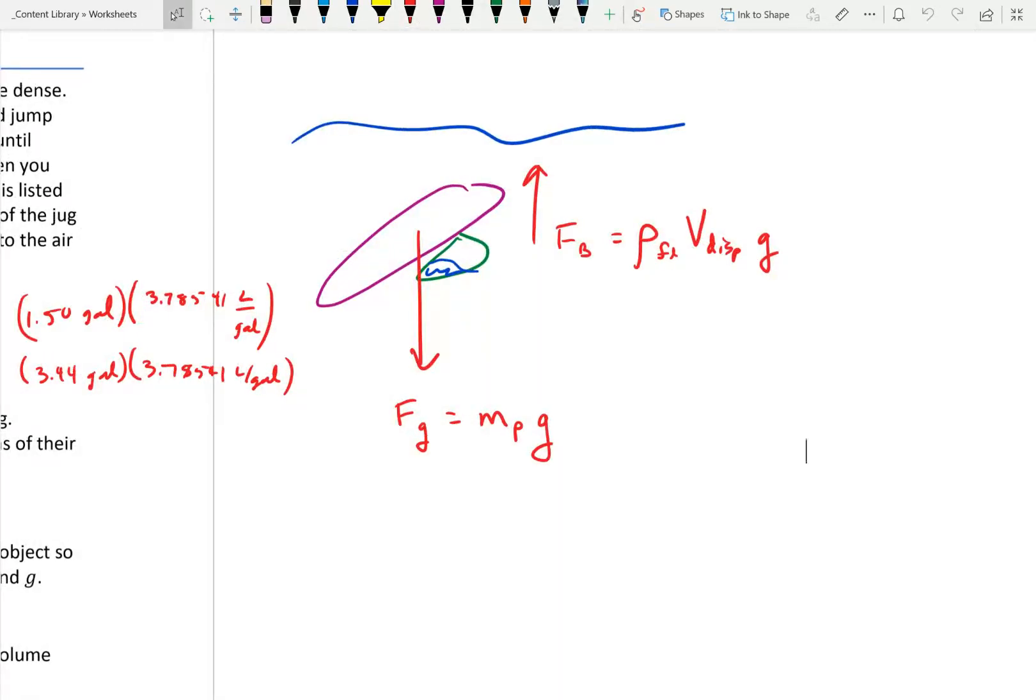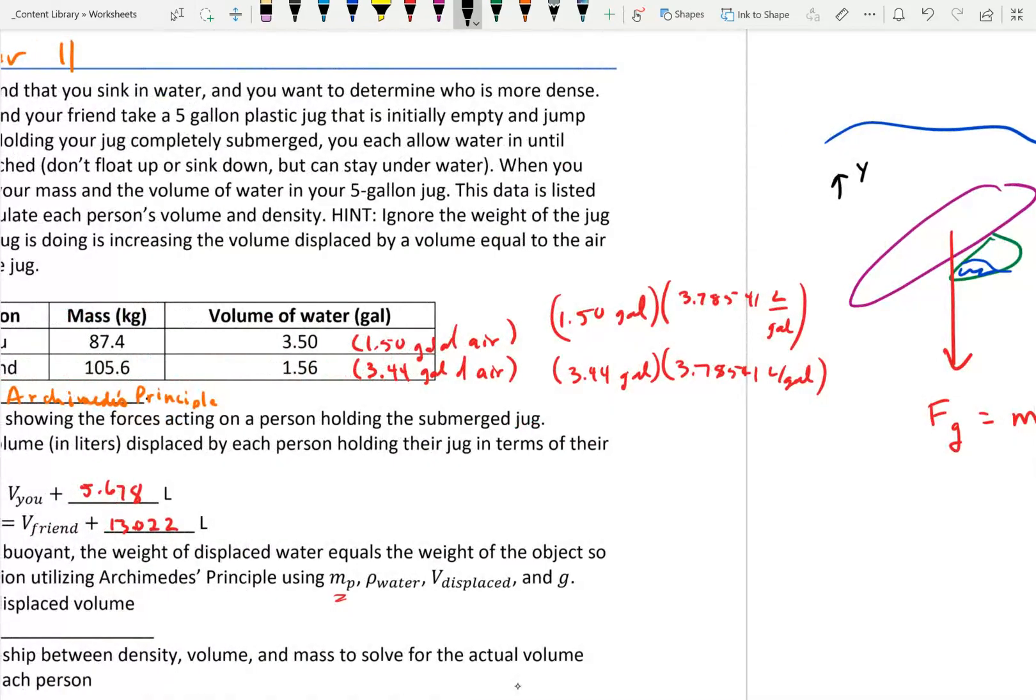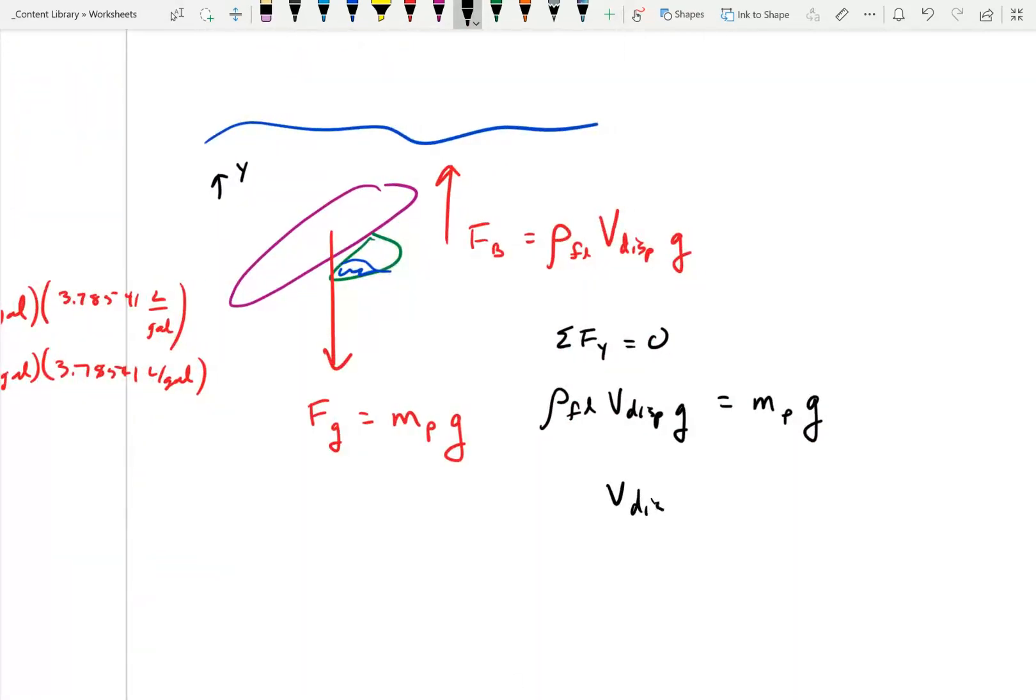That's just doing the old equilibrium problem. Call up direction the positive y direction. Sum of the forces in y, in equilibrium, equals zero. So that's density of the fluid times volume displaced times g equals the mass of the person times g. Notice there is a g on both sides, so I can cancel the g, and the volume displaced is the mass of the person over the density of the fluid.